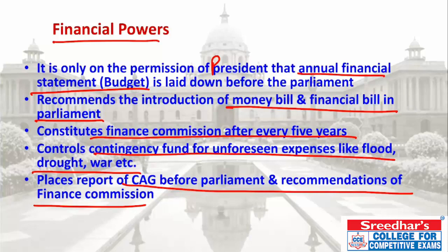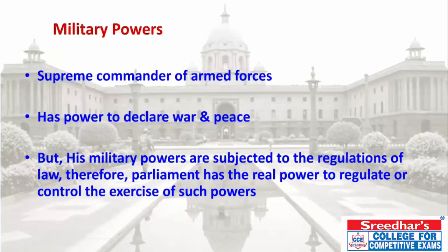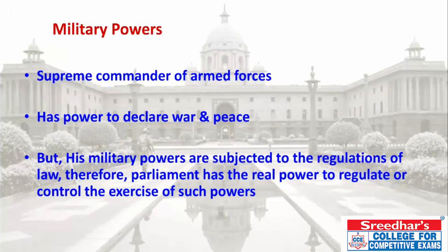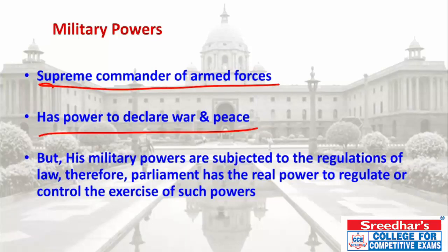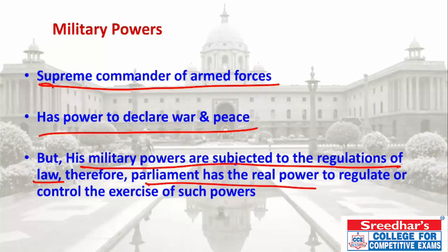The Finance Commission is constituted every five years by the President. The Contingency Fund — an emergency fund for unforeseen expenses like floods, drought, or war — is controlled by the President. CAG reports are placed in Parliament, and the Finance Commission's recommendations also require the approval of the President. Regarding military powers, the President is the Supreme Commander of the Armed Forces and has the power to declare war and peace.